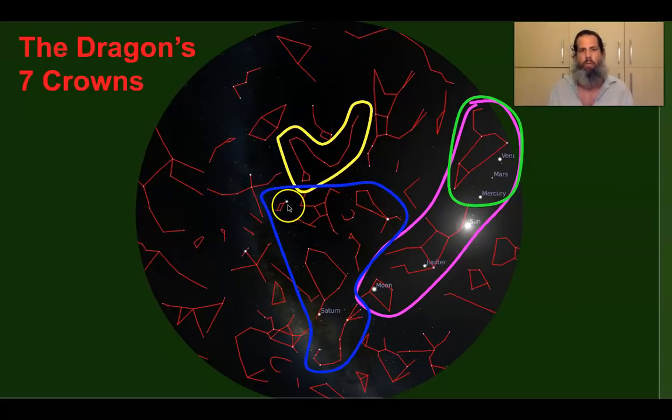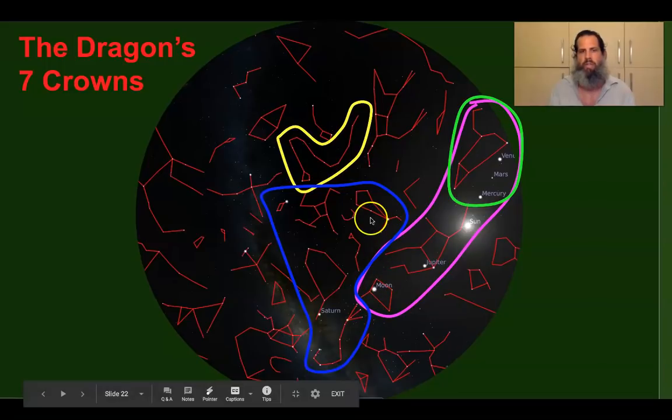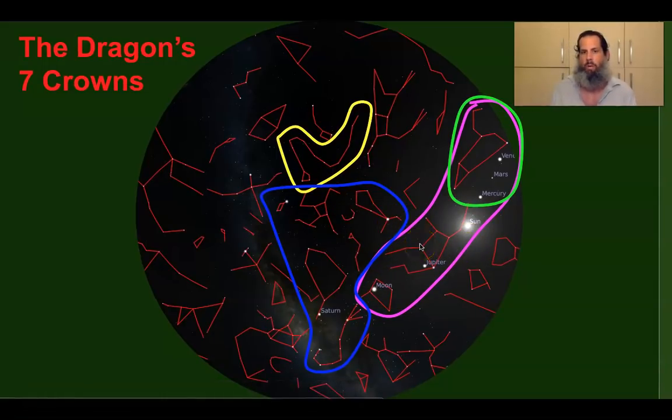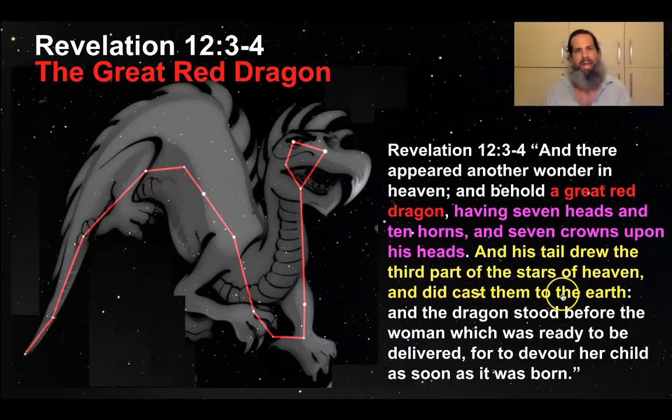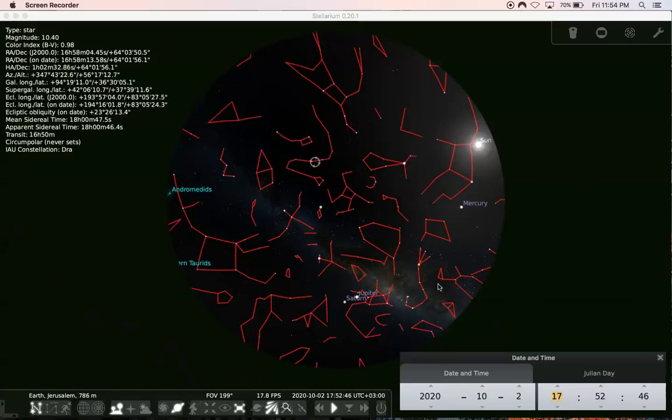You can see how the dragon was waiting to devour the child as soon as it was born. It's basically right next to the woman waiting for the child to come out. Now, regarding his tail drawing the third part of the stars and to cast them to the earth, I'm going to share that right now. Here I am in Stellarium and I have it set up a couple of days in advance to October 2nd, 2020, coming up in about a week from now.